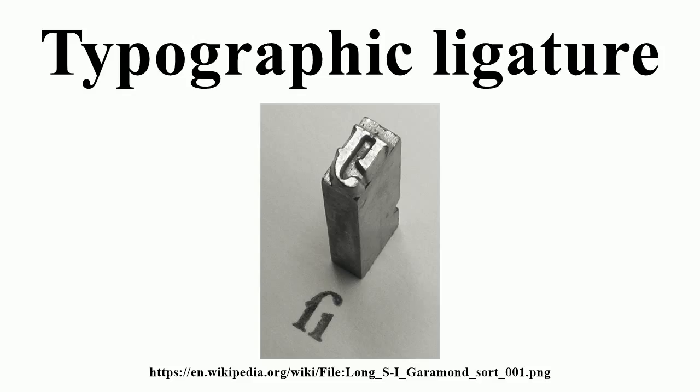In German orthography, the umlauted vowels Ä, Ö, and Ü historically arose from A, O, U ligatures. It is common practice to replace them with AE, OE, UE digraphs when the diacritics are unavailable, for example in electronic conversation, while in alphabetic order they are equivalent not to A, O, U but to simple A, O, U — except in phone books where they are treated as equivalent to A, O, and U.